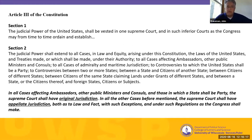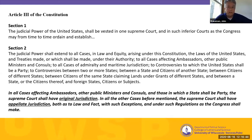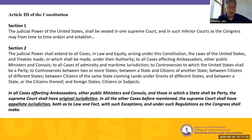Article III of the Constitution sets up the federal judiciary. Section 1 tells us that we have to have one Supreme Court and inferior courts as Congress establishes, which pretty much means Congress gets to create the federal judiciary. In Section 2, Article III talks about federal jurisdiction — federal judicial power over certain types of cases. It says explicitly that in cases affecting ambassadors, other public ministers and consuls, and those in which a state shall be a party, the Supreme Court shall have original jurisdiction. In all other cases, the Supreme Court shall have appellate jurisdiction.